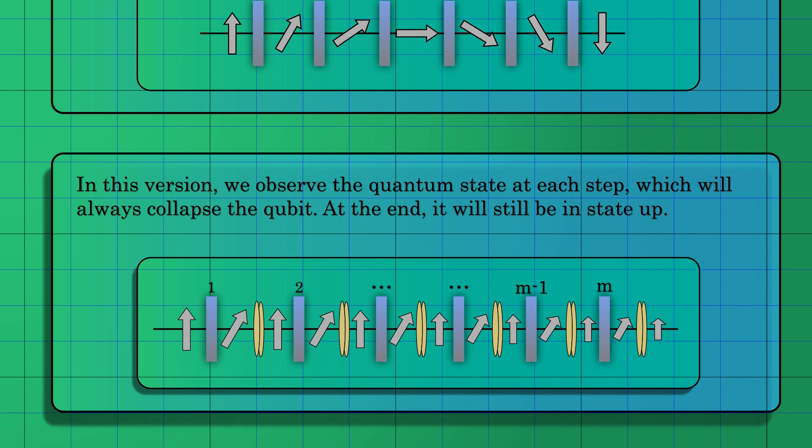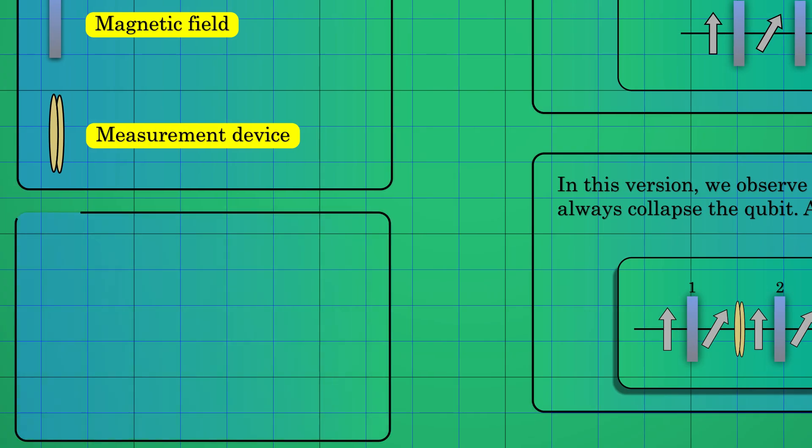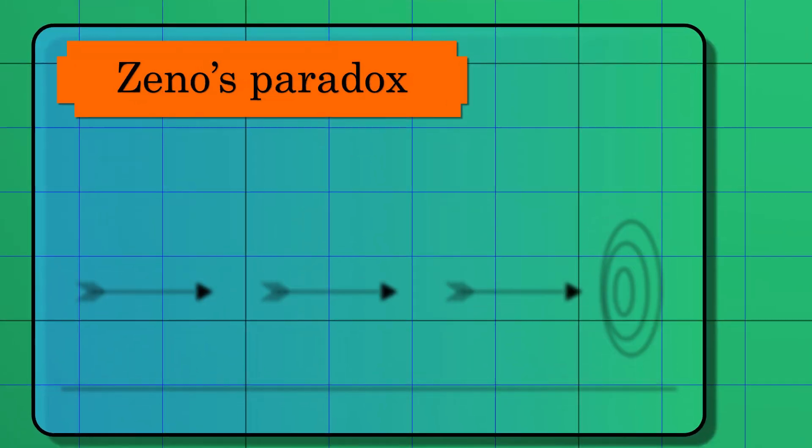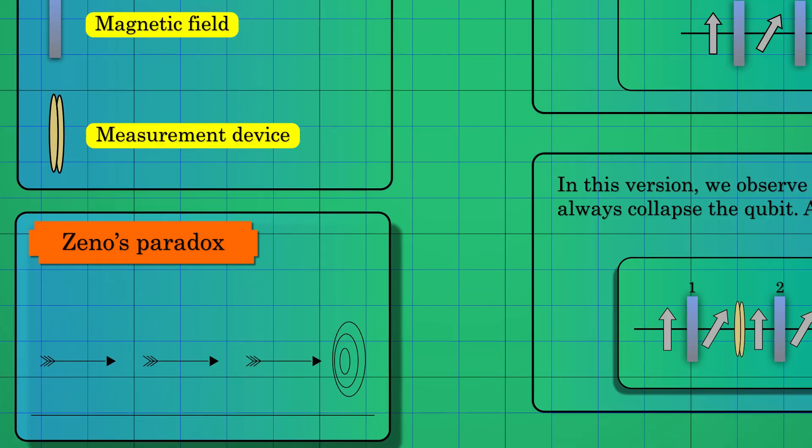This is in contrast to the state without measurement. Interestingly, this entire process bears a striking resemblance to Zeno's paradox, in which Zeno's arrow appeared to be frozen in motion when observed at every instant of time.